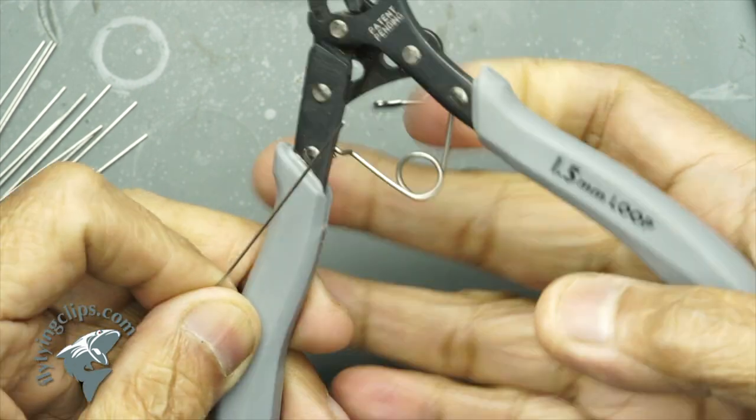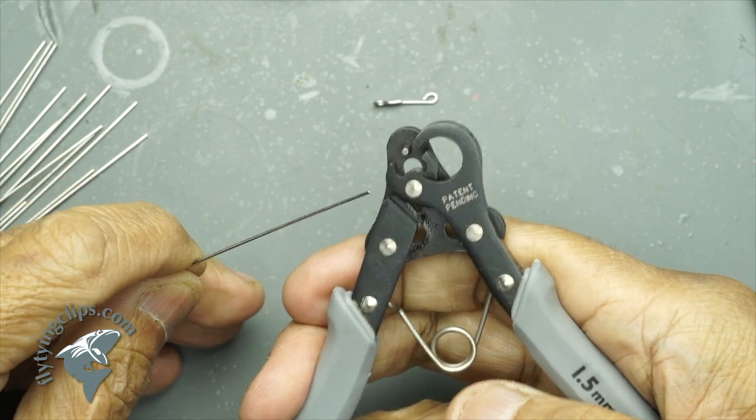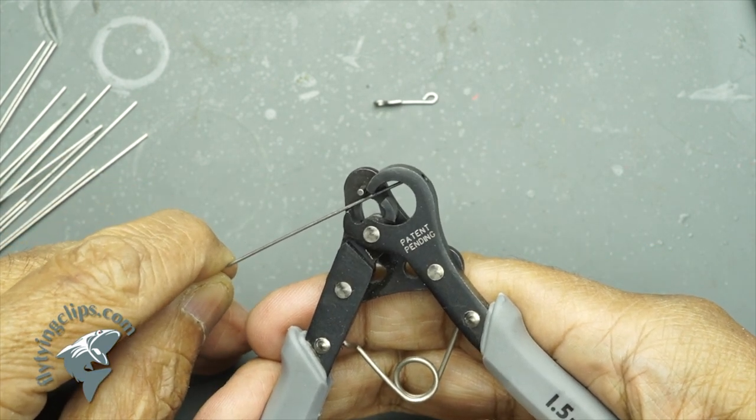How this works is you take that wire and thread it through the jaws. You will see there is a little hole on that back side and you will thread it through the jaws and into that hole.